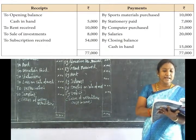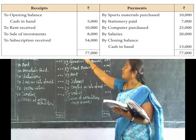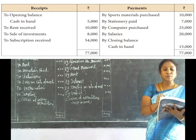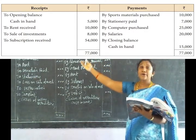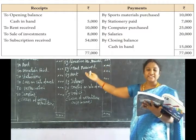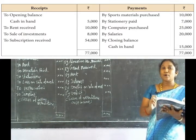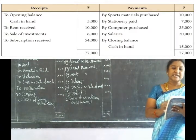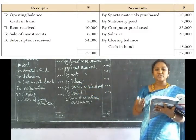The next one is subscription received. The next one is sports material purchased — sports material purchase amount is on the debit side. The next one is computer purchased, and the next one is salaries — salaries amount is on the debit side. The next one is closing balance.